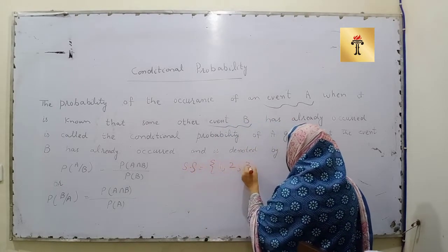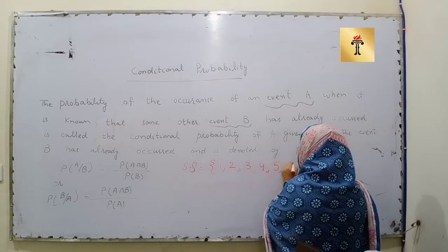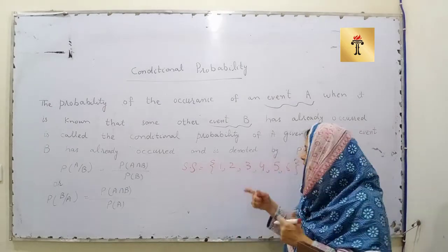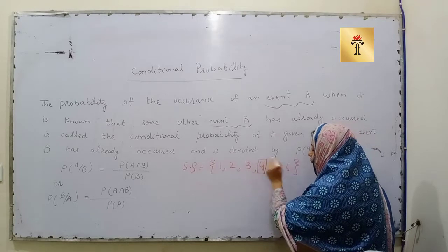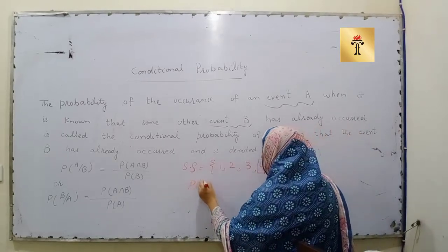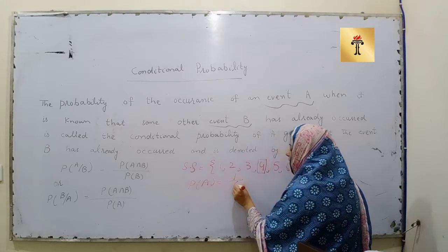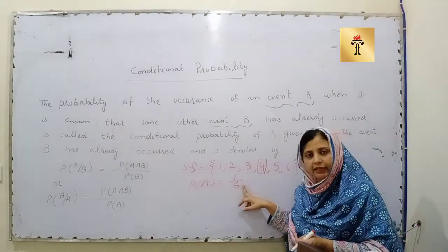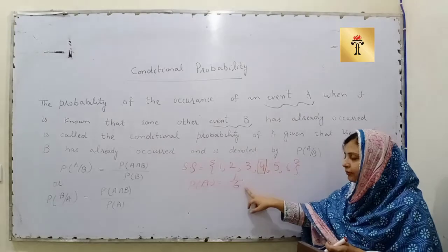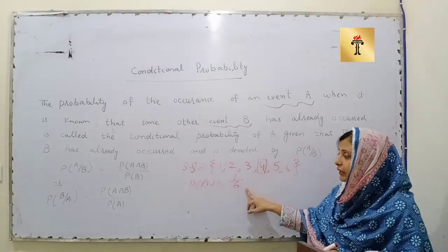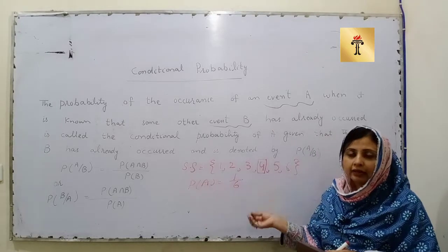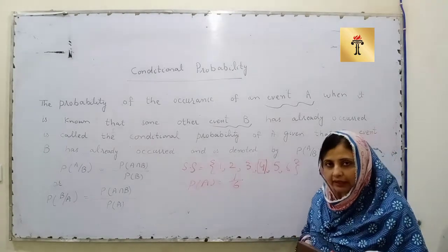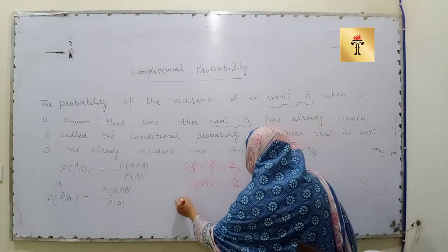For example, when we roll a fair die, the possible outcomes are 1, 2, 3, 4, 5, 6. We are interested in getting number 4 to win the game. The probability of A — getting number 4 — is 1 by 6, because every number has an equal chance of 1 by 6. Now apply the condition: given that event B has already occurred, and B is that the outcome is an even number.